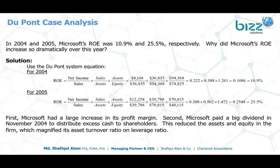Plugging in the figures for 2004, the equation solves to 10.9%. In 2005, the net profit increased significantly — to around $8,800 — while the equity base was lower. Working through the DuPont calculation with these updated figures, the result comes out to 25.5%.